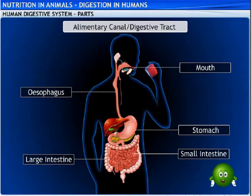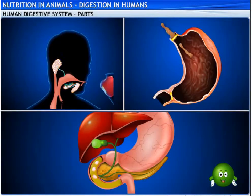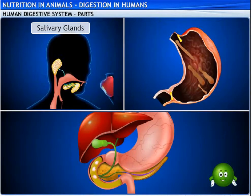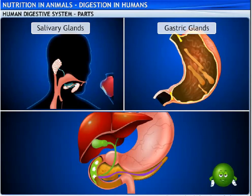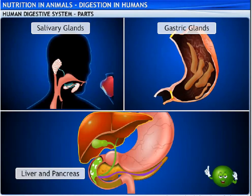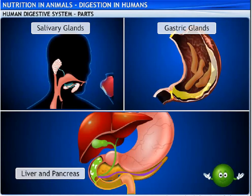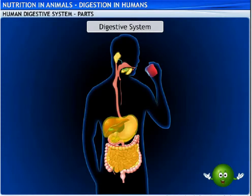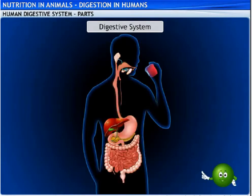Organs secreting juices also help in breaking down complex food into a simpler form. These are the salivary glands, the gastric glands on the wall of the stomach, the liver, the pancreas, and the intestinal glands. The digestive tract along with these associated glands together forms the digestive system. Let me take you through each part of the digestive system.